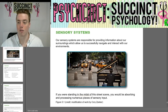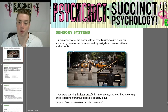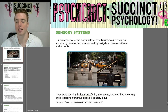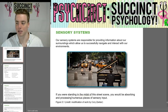First off, we have sensory systems. Our sensory systems are responsible for providing information about our surroundings, which allow us to successfully navigate and interact with our environments. For this picture, if you were standing in the midst of this street scene, you would be absorbing and processing numerous pieces of sensory input, because there's a whole lot going on there, so your senses would be a little overloaded.